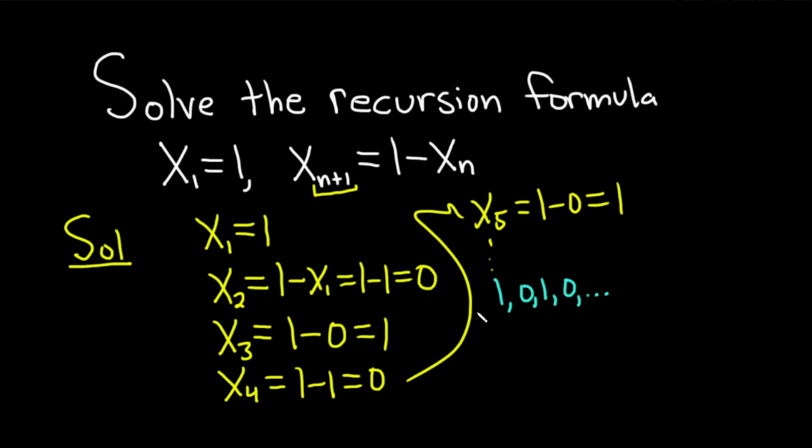There's a couple different ways to do it. One way to do it is to think about negative 1 to the n. So negative 1 to the n gives rise to the following sequence: negative 1, 1, negative 1, 1.